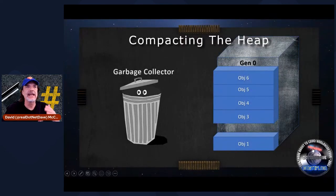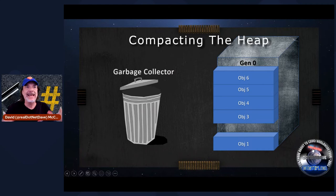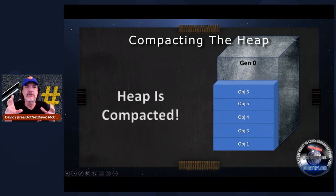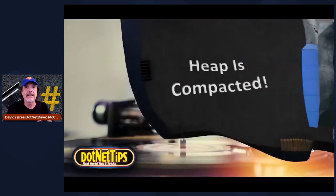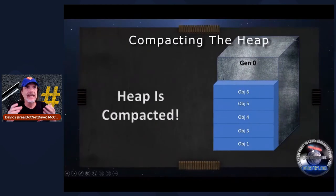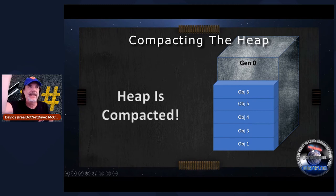Once .NET finds those objects and removes them from memory, it will actually compact the heap and move the remaining objects down. So you can see here I have object one, three, four, five, six now. Then when you create another object, it'll be the next object at the top of the heap. This is how the memory heap works.